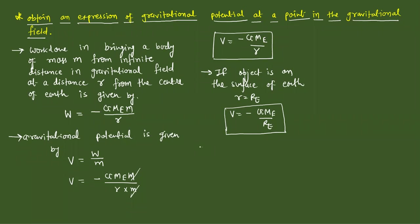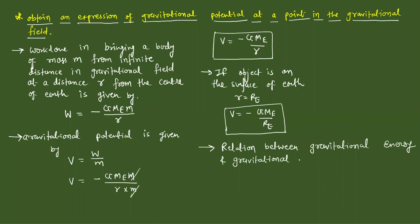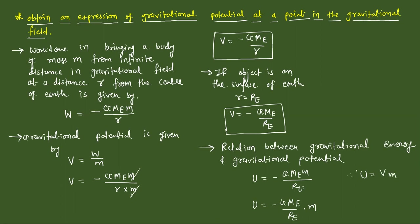Now I have to find the relation between potential energy U and gravitational potential V. The potential energy is U = -GMₑm/r. But -GMₑ/r is the potential V, so U equals potential V into mass m. You have to remember this equation: U = V × m.